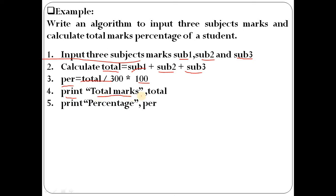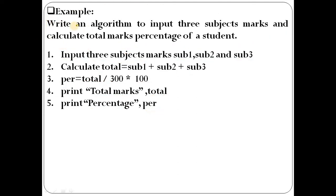The total marks value is displayed and stored in the variable 'total'. Similarly, the percentage is stored in a variable 'per' and printed using a print statement. That is a very easy way to write the algorithm for this formula. This is the question and that is the answer we can solve through the process of an algorithm.